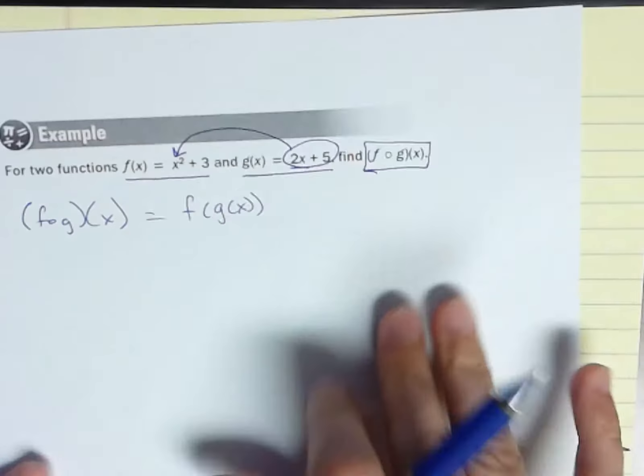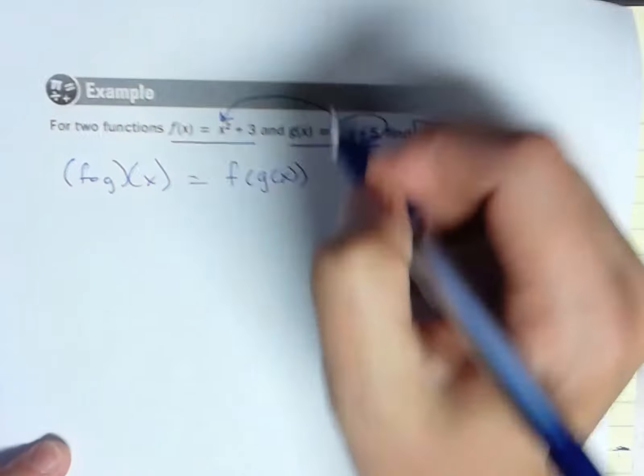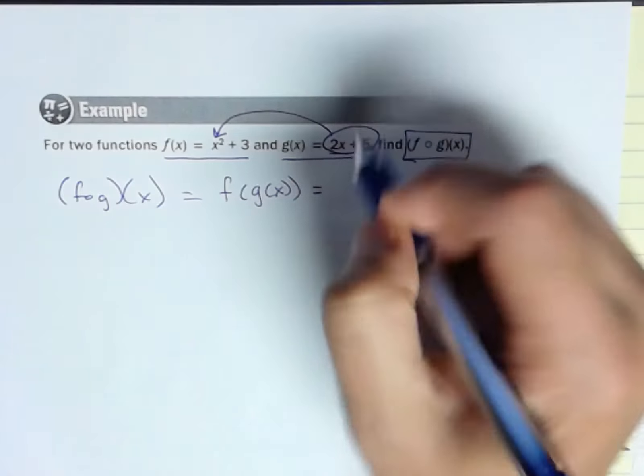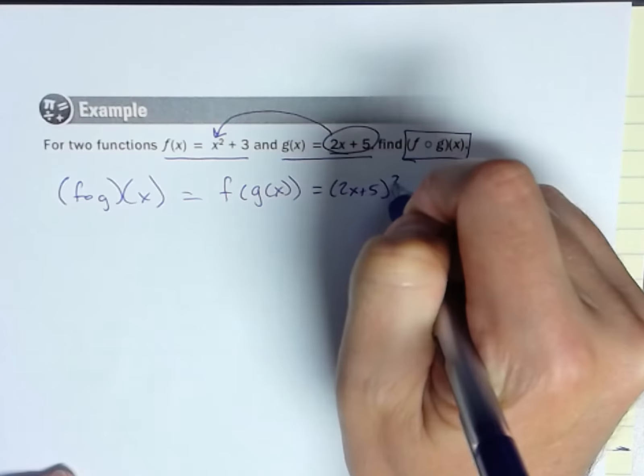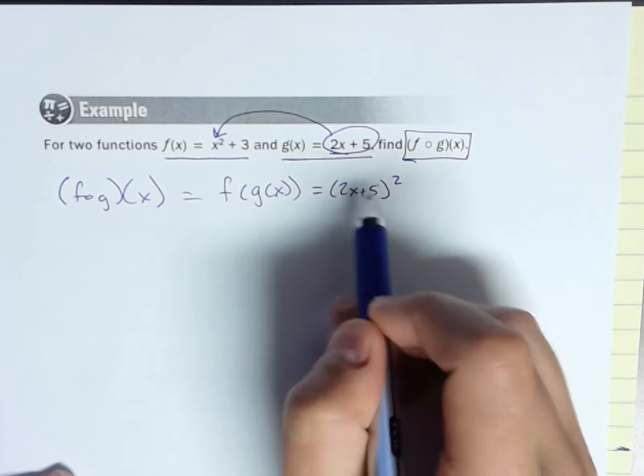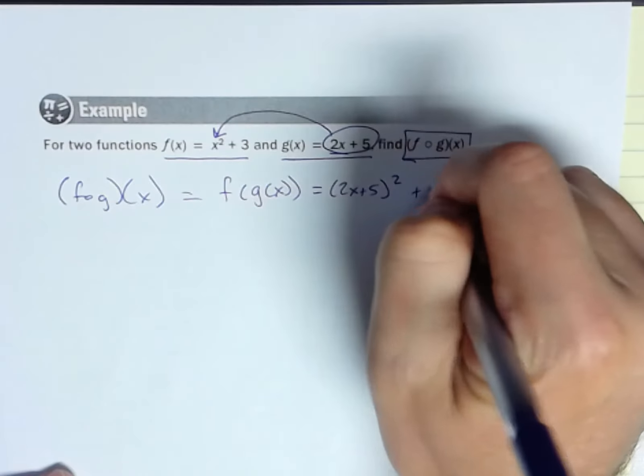So if I do that, I'll get this: equals 2x plus 5 squared. So this whole thing became my x, plus 3.